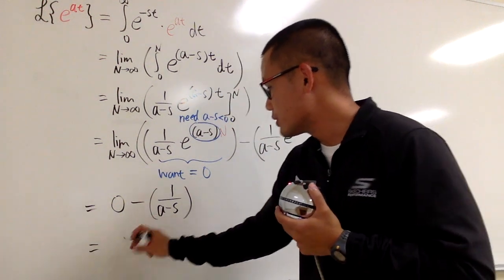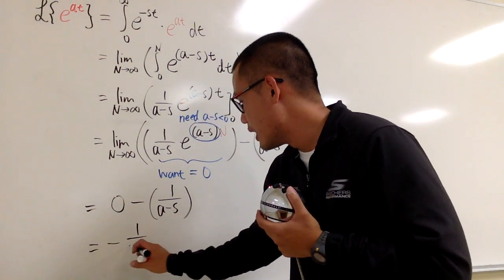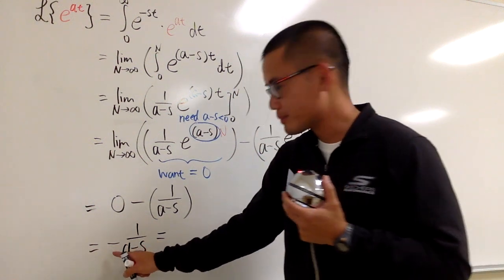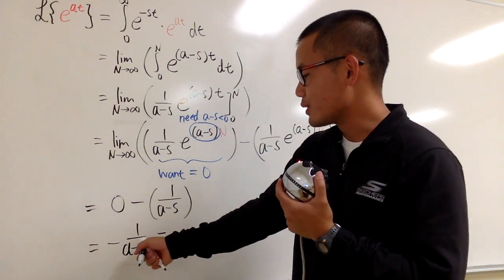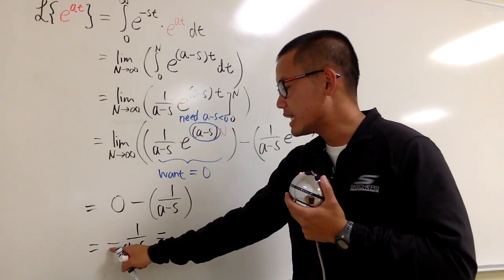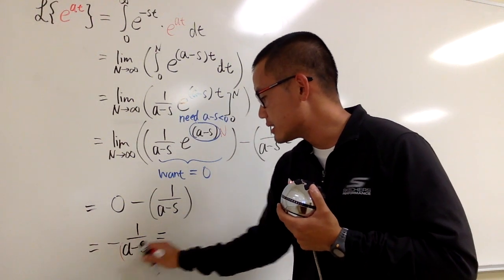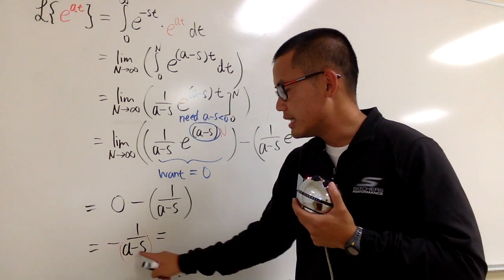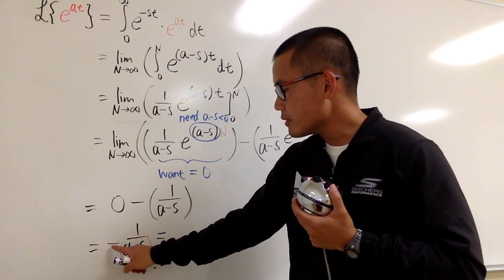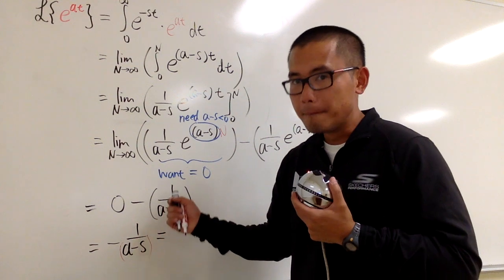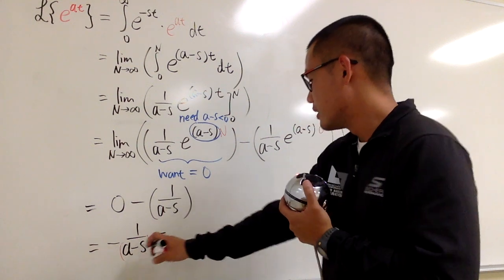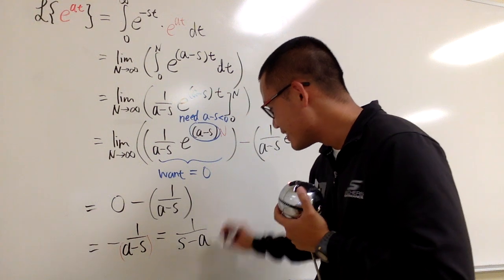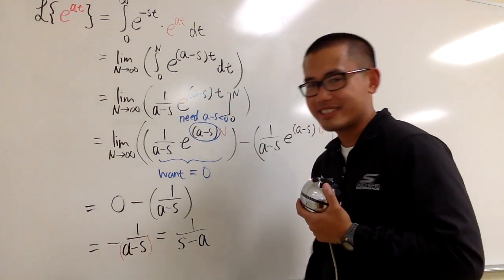You will see, we just have negative 1 over a minus s, but you know I can just switch the negative sign and also the subtraction. If you put a negative down in the denominator, you can have negative a times negative s. Negative a and then negative times negative s becomes s minus a. 1 over s minus a. Just distribute negative sign and then you get this.